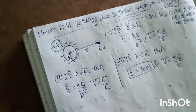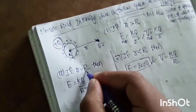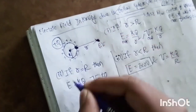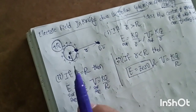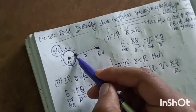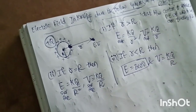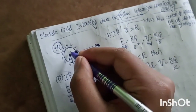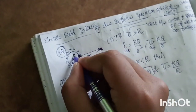Second case: r equal to capital R — the point is on the surface of the sphere. Third case: r less than capital R — the point is inside the sphere. For the inside of a hollow sphere, E is zero. The electric field inside a hollow conducting sphere is zero.